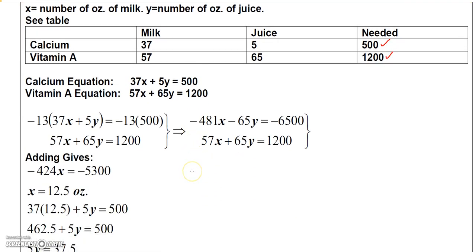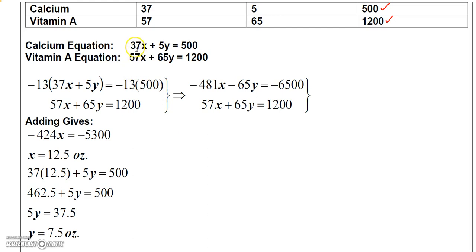To solve this, I need to eliminate one variable. I noticed that if I multiply 5 by 13 that gives me 65, so I'll multiply the first equation by negative 13 to create opposite coefficients. That gives me negative 481X minus 65Y equals negative 6500. Adding this to the second equation, the Y terms cancel. Negative 481X plus 57X gives negative 424X, and negative 6500 plus 1200 gives negative 5300.